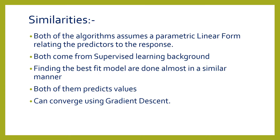One key similarity is that both algorithms assume a parametric form relating the predictors to the response. In simple language, a parametric form is when a model assumes something about the data, and a non-parametric form is when the algorithm does not assume anything from the data. Some parametric algorithms are linear regression, logistic regression, and simple neural networks, while non-parametric algorithms include decision trees, random forest, and boosting algorithms.